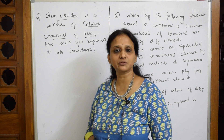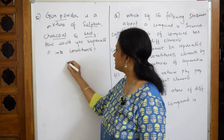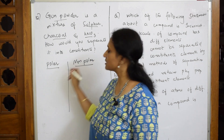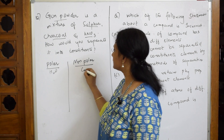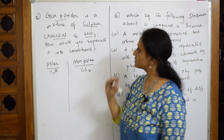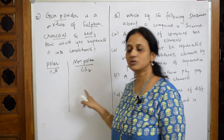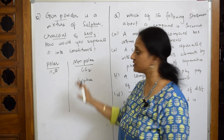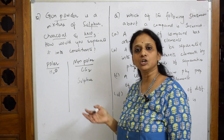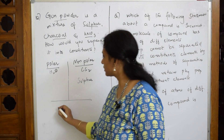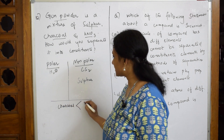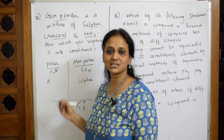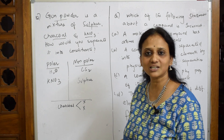We have two types of solvents: polar solvents and non-polar solvents. The polar solvent is water — the universal solvent. The non-polar solvent is carbon disulfide, which is a linear molecule. Sulfur is soluble in the non-polar solvent (carbon disulfide) — so sulfur is separated out. Charcoal is neither soluble in water nor in carbon disulfide, so charcoal is obtained separately. The leftover is KNO3 — because it is an ionic compound, it dissolves in the polar solvent (water). So all three are separated.